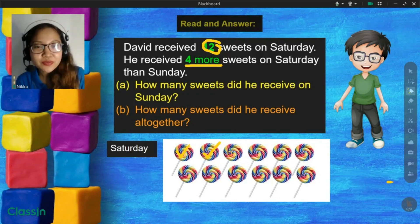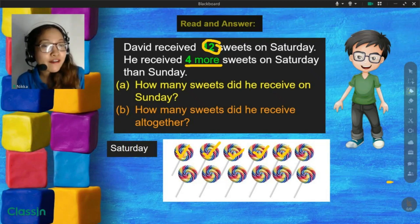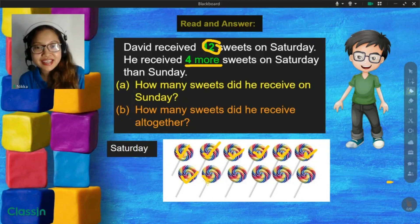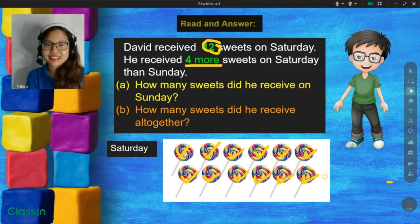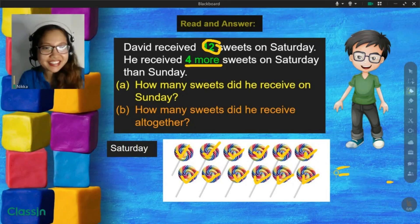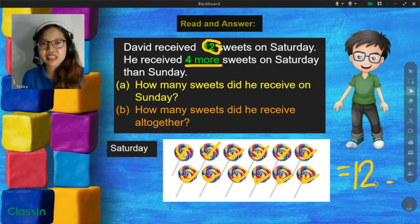1, 2, 3, 4, 5, 6, 7, 8, 9, 10, 11, 12. How many? Yes, 12. That means David received 12 sweets on Saturday.